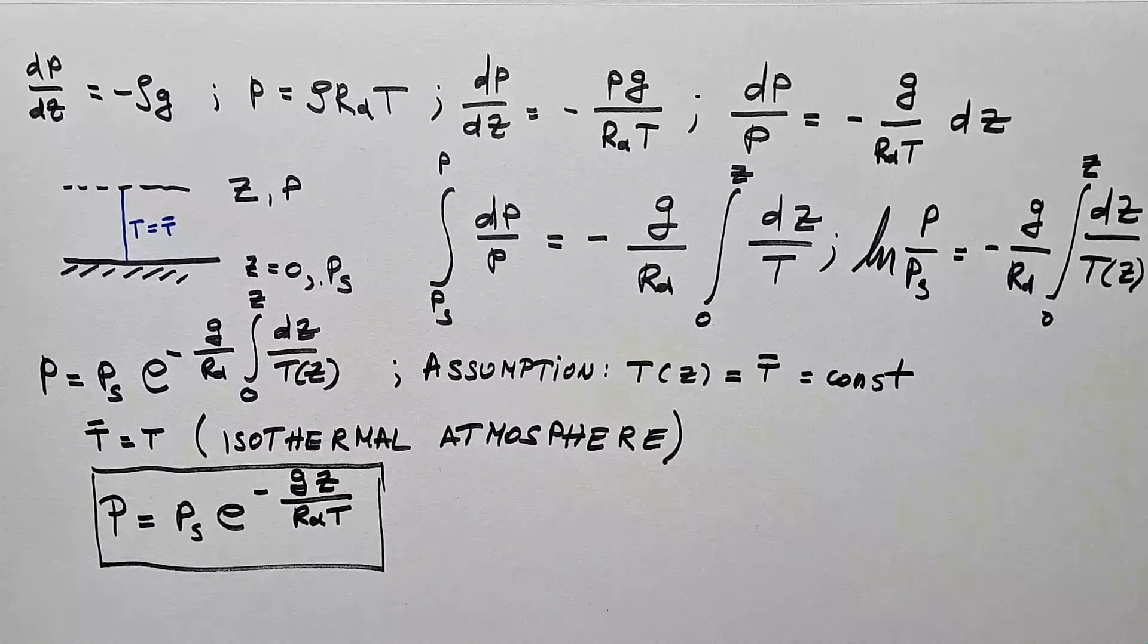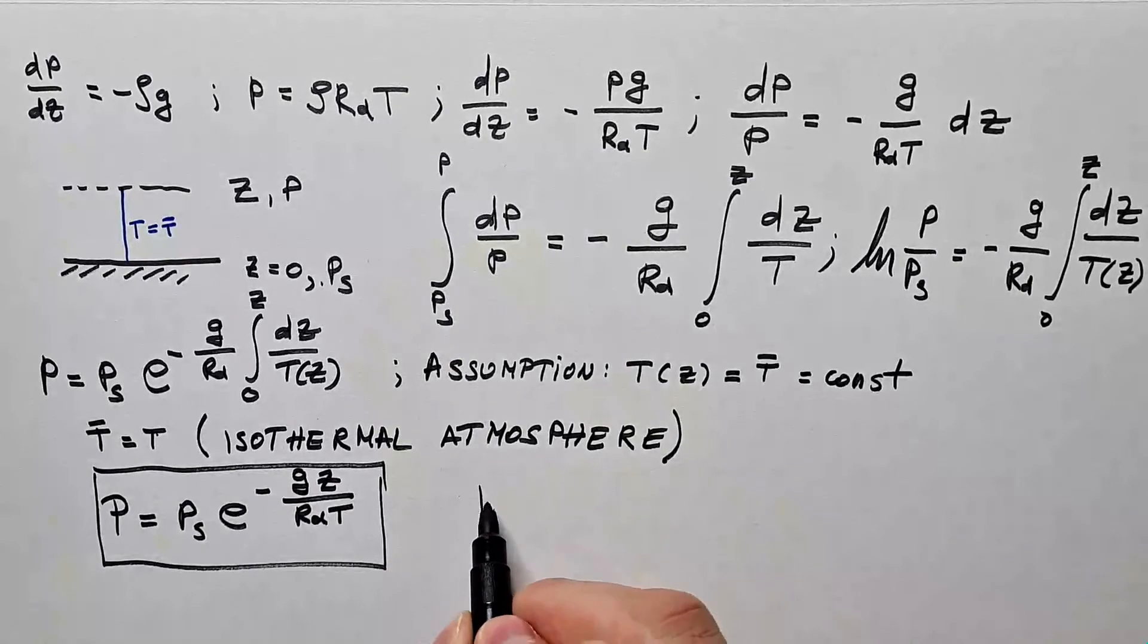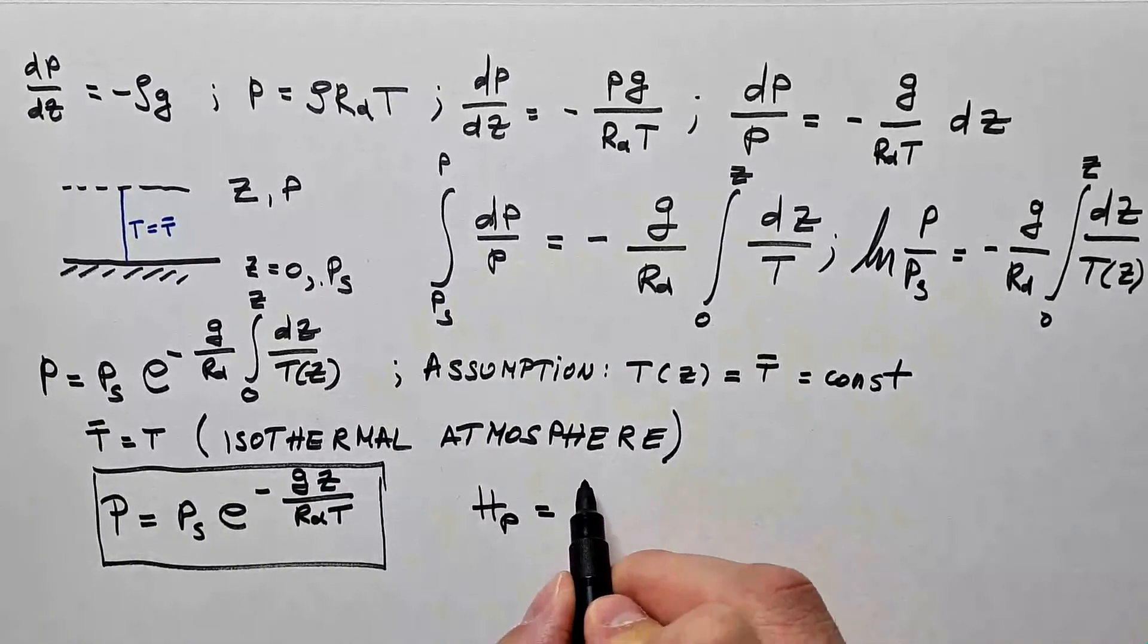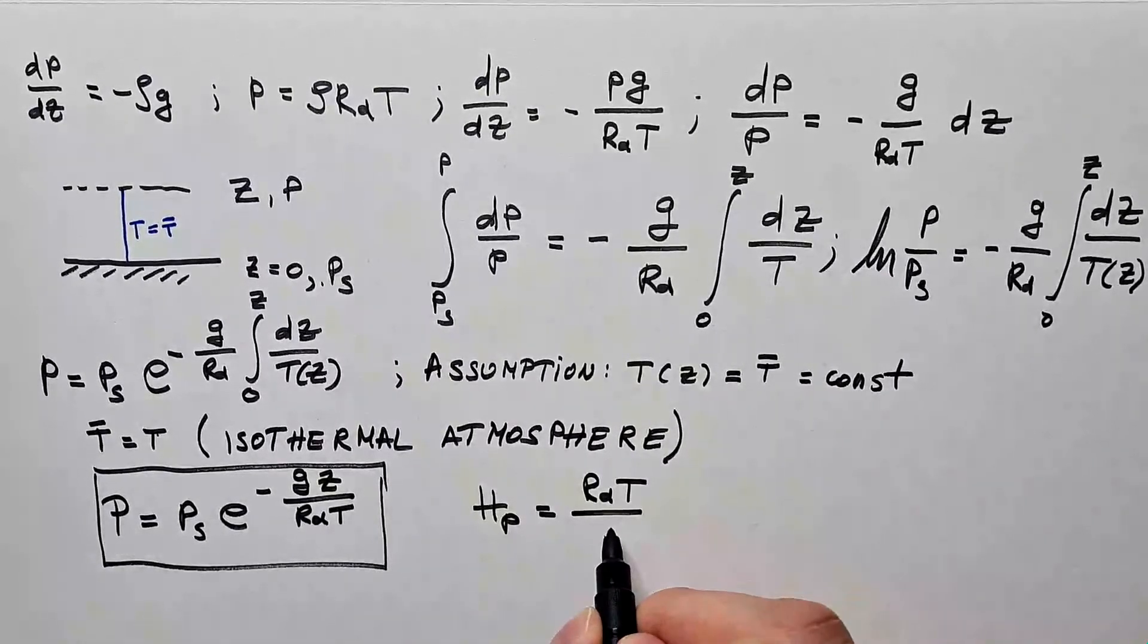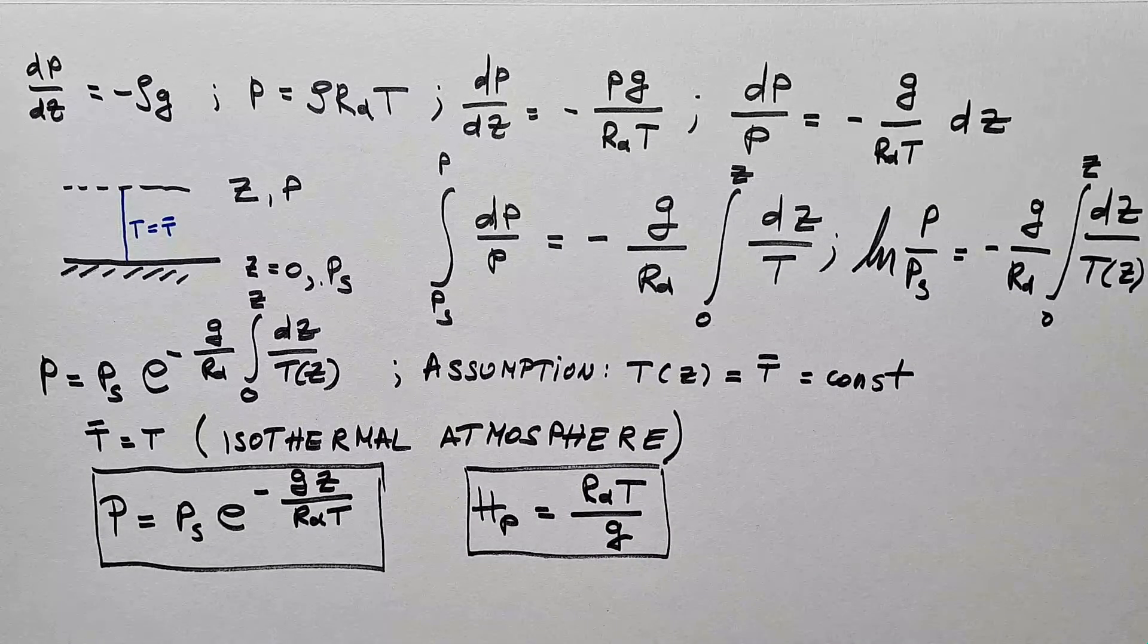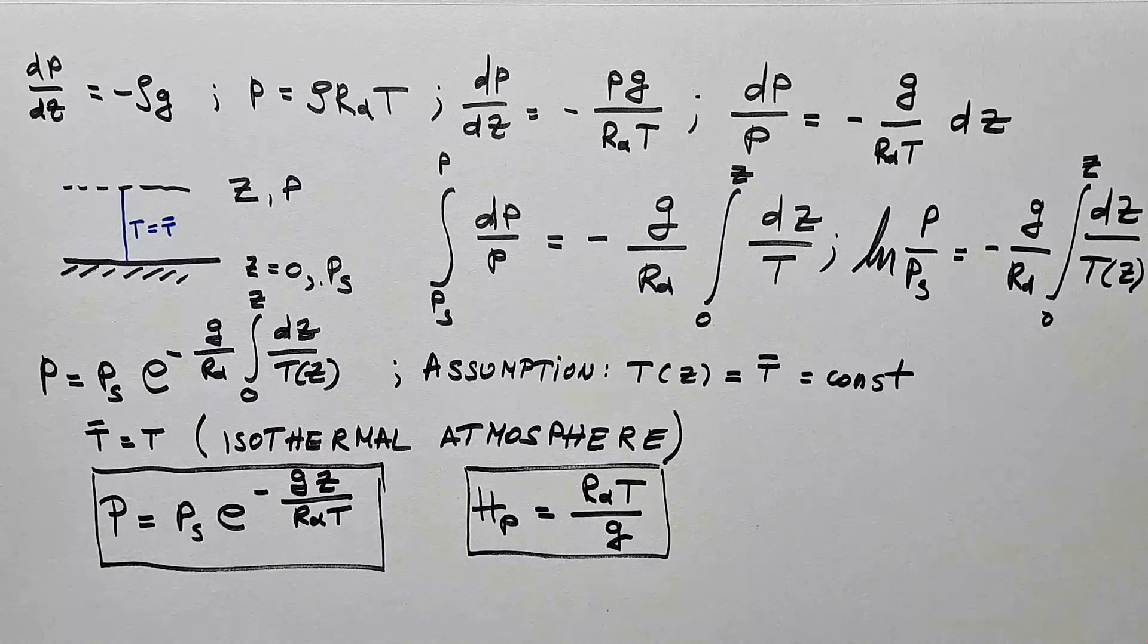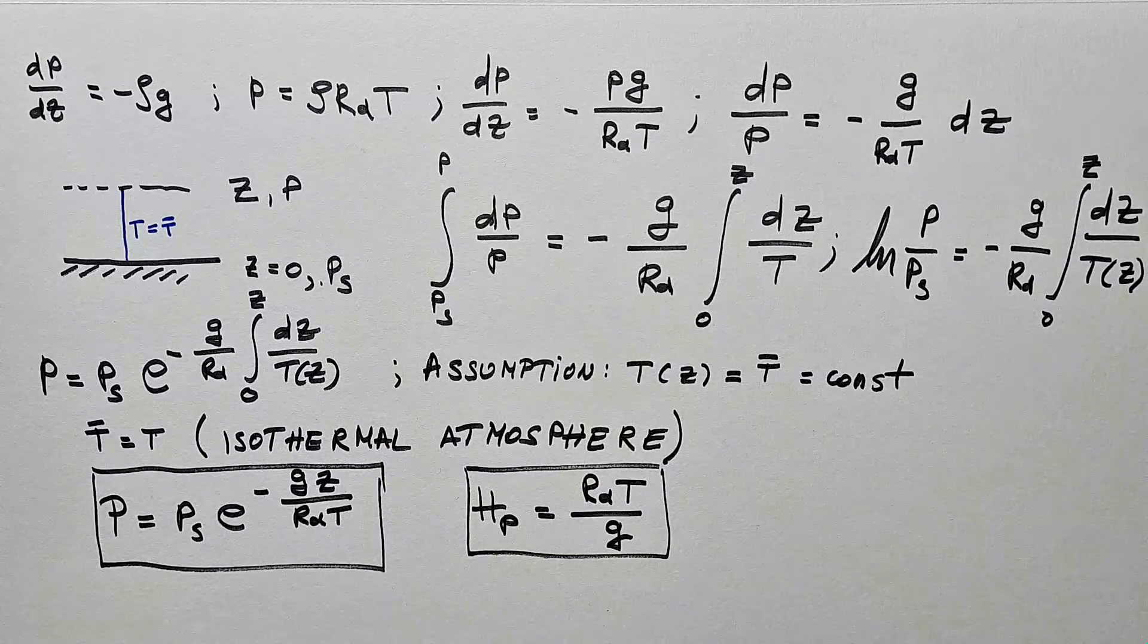But let's look at it a little bit further. Let's introduce a substitution, hp that equals Rd T over g. This substitution is called pressure scale height, or just scale height, or sometimes isothermal scale height. I will usually call it pressure scale height.